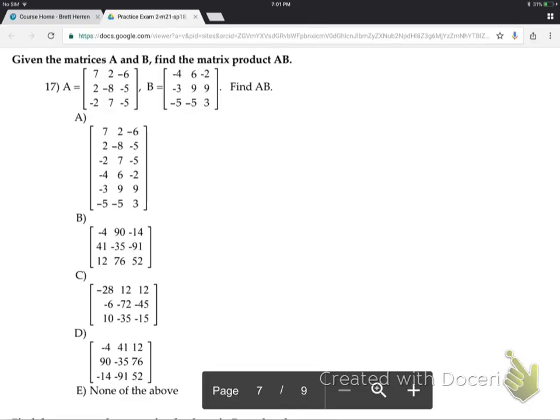So number 17. This is just multiply two matrices. So just put that in your calculator. Put that in your calculator. Hit the buttons. You'll get that answer. Multiply the matrices.